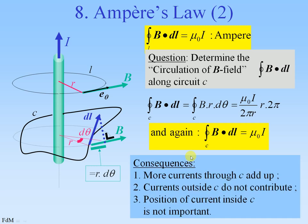The consequences are: when you have more circuits through C, it will add up in the circulation — not in the B-field itself, but in the circulation of the B-field. Currents outside C do not contribute. And the position of the current inside C is not important.